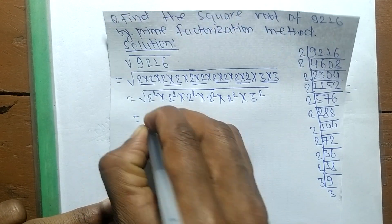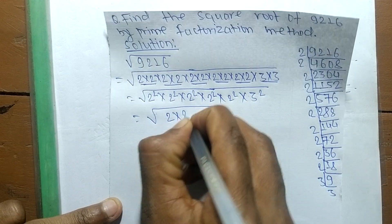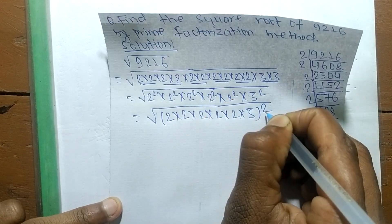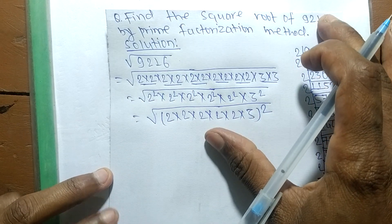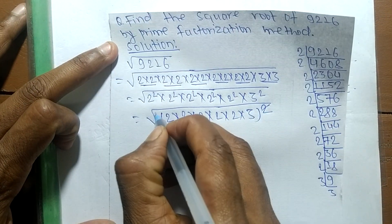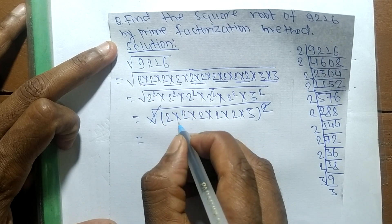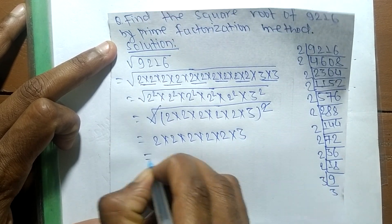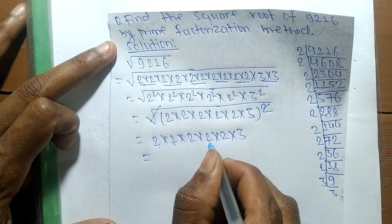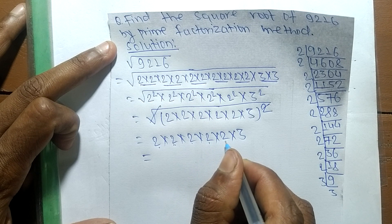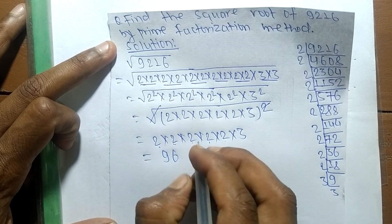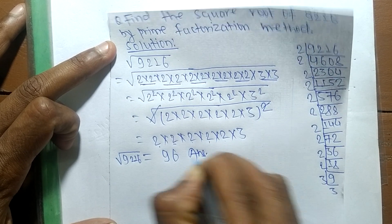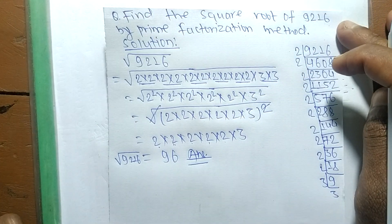We take the common square from all these numbers. The square and square root cancel, and the remaining numbers are 2 × 2 × 2 × 2 × 2 × 3. So: 2 times 2 means 4, 4 times 2 means 8, 8 times 2 means 16, 16 times 2 means 32, and 32 times 3 means 96. So the square root of 9216 is equal to 96. That's all for today, thanks for watching.